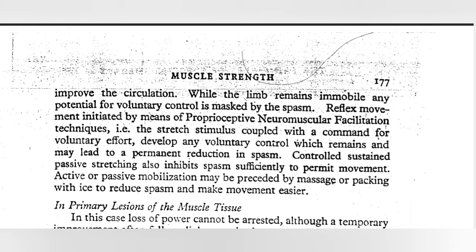We have to initiate movement by means of proprioceptive neuromuscular facilitation techniques. We initiate movement through stretch and stress, and give commands for voluntary efforts. We develop voluntary control, which may lead to permanent reduction in spasm. We give stretch and passive stretching, which also inhibit spasm significantly, so that movement is restored.